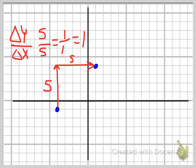I'll go through two more examples. On this next example, my change in Y, starting from the point on the left, I'm going down eight. Again, down is negative.